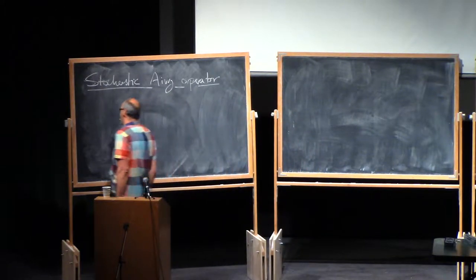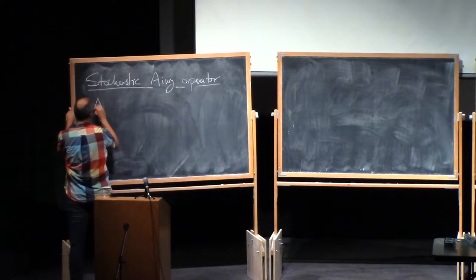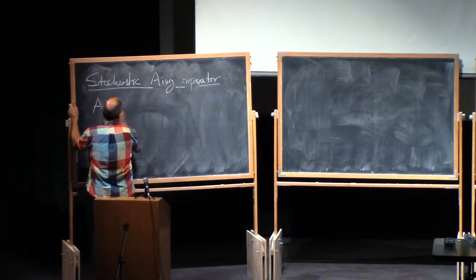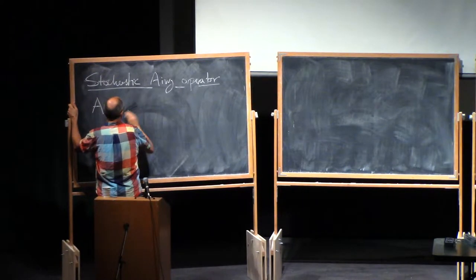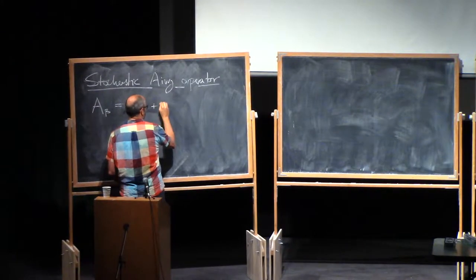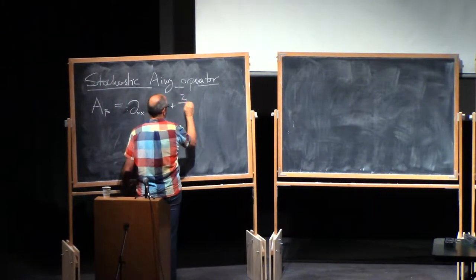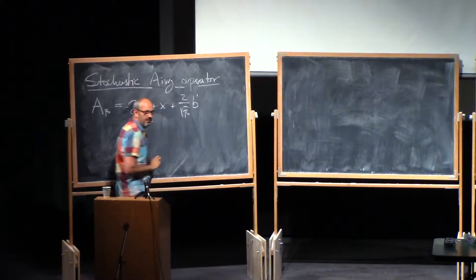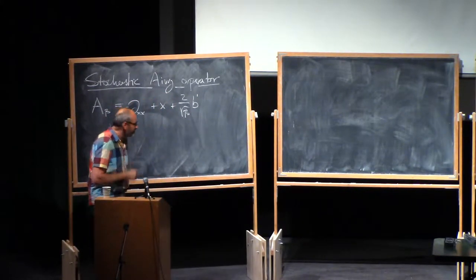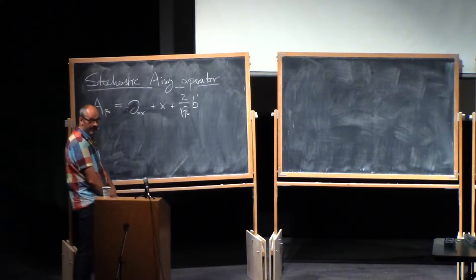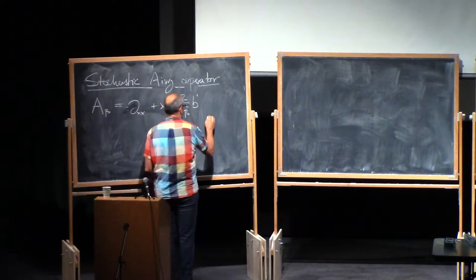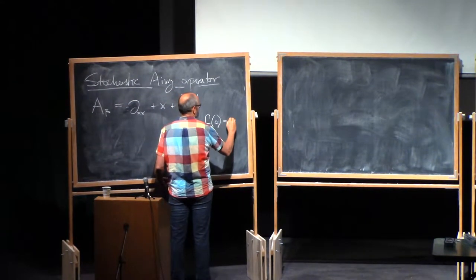That's called the stochastic Airy operator. We called it A_beta, which consists of a minus second derivative, plus multiplication by x, plus 2 over root beta times multiplication by B prime, which is the derivative of white noise — the derivative of Brownian motion. We also had the Dirichlet boundary condition f(0) = 0.